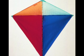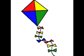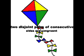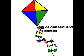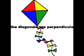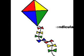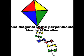Next, we have a kite. A kite is a quadrilateral in which two disjoint pairs of consecutive sides are congruent. In a kite, two disjoint pairs of consecutive sides are congruent, the diagonals are perpendicular, and one diagonal is the perpendicular bisector of the other.